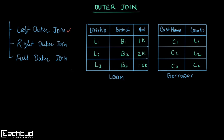In left outer join, we will have all the rows or all the records from the left table, but we will only have those tuples from the right table which have a corresponding key in the left table. Similarly, right outer join is the reverse of left outer join — we will have all the records from the right table but only those records from the left table which have a corresponding key in the right table. In full outer join, we will have all the records from both tables.